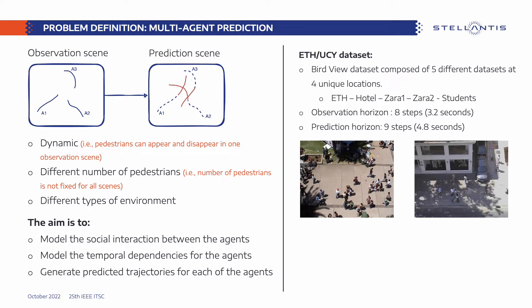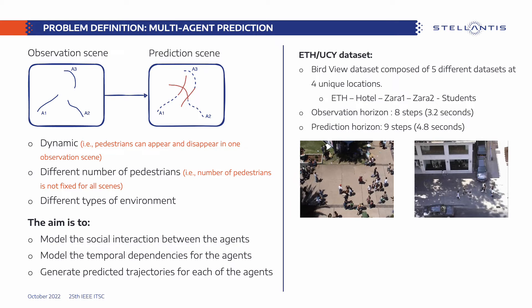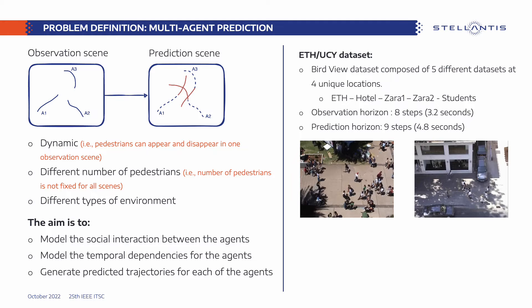This will require two main steps: first, modeling the spatial-temporal behavior, and then finding the best decoding strategy to generate the trajectories. In this work, we use the well-known ETH-UCY datasets and adopt the leave-one-out cross-validation strategy during results evaluation.